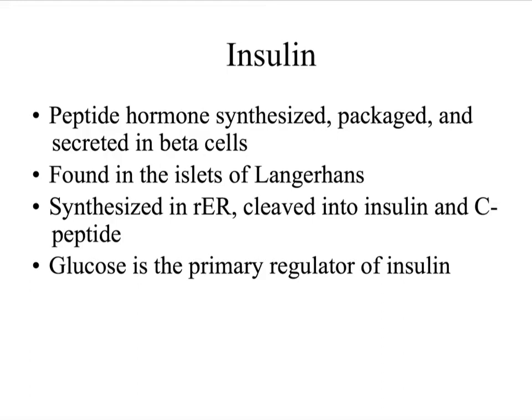Exogenous insulin does not contain C-peptide. So if you were to measure insulin and C-peptide in a diabetic who is taking insulin, insulin levels would be higher and C-peptide levels would be lower. Remember that glucose is the primary regulator of insulin and needs to be transported into a beta cell in order to propagate a signal for insulin to be expelled out of the cell into the bloodstream.